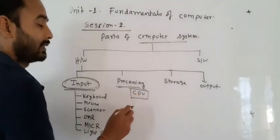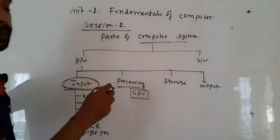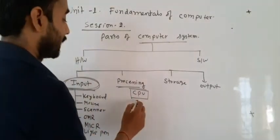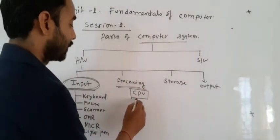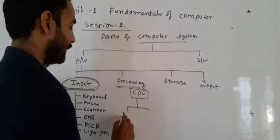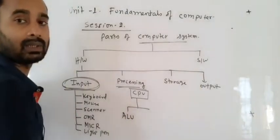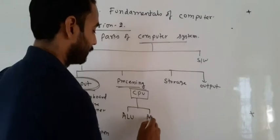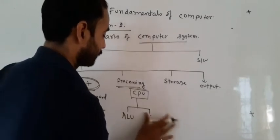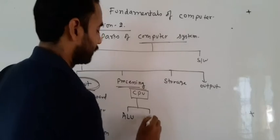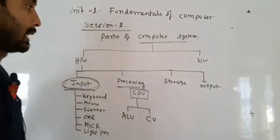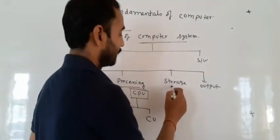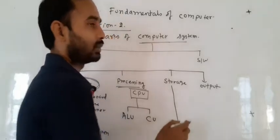In processing devices, there are mainly two components: ALU (arithmetic logical unit) and control unit. And storage means the devices which are used to store the data for future use.